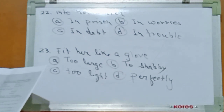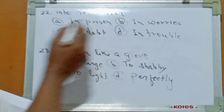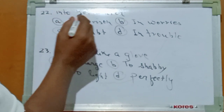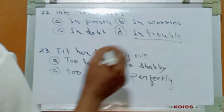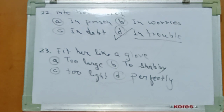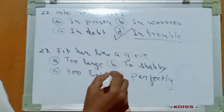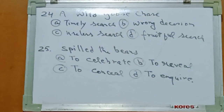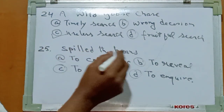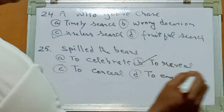Questions 22 to 25 are idioms and phrases. Number 22: into hot water means in trouble, Option D. Number 23: fits hard like a globe means perfectly. Number 24: wild goose chase means useless search. Number 25: spill the beans means Option B: to reveal.